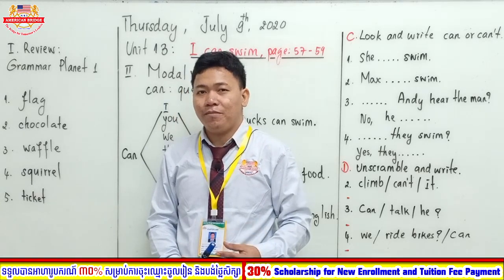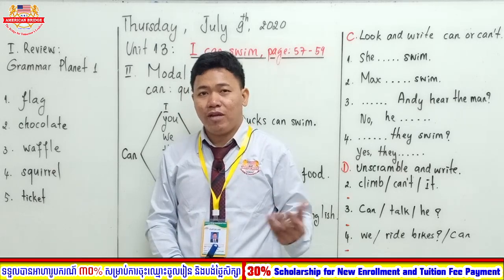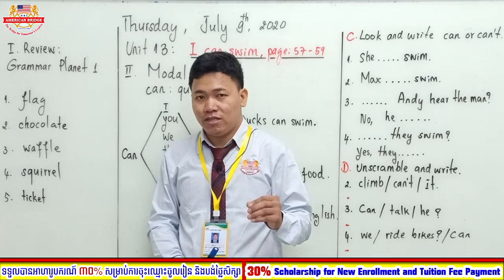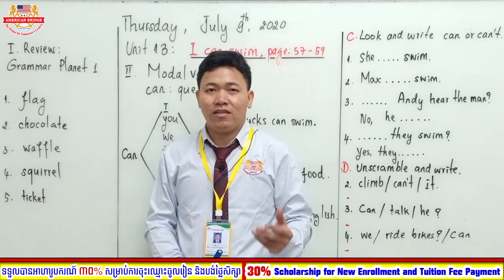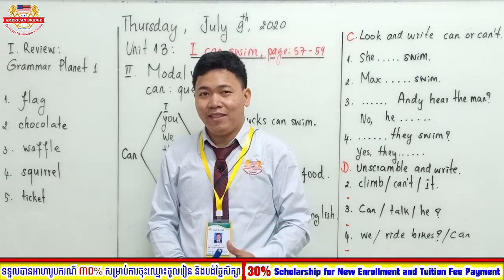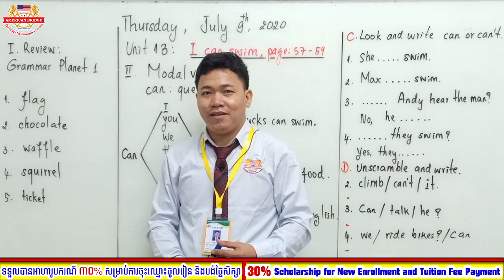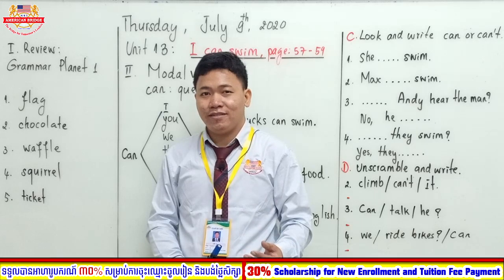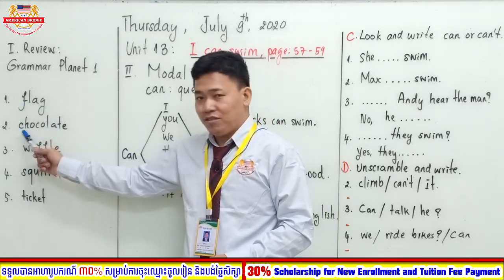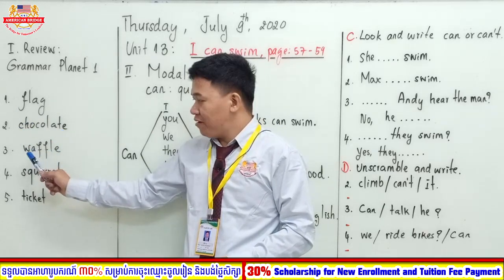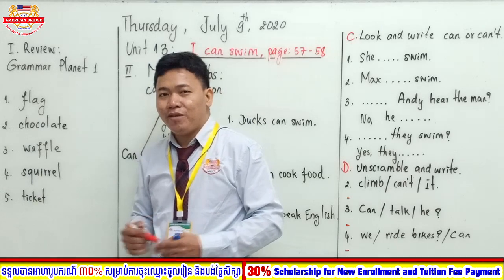Number three is waffle. Waffle is a kind of bread made from milk, water, flour, and sugar. How about number four, squirrel? Squirrel is a small animal that has a long tail and lives in trees. Number five, take it — a piece of paper that allows you to join a show or some events. Everyone read together: fleck, chocolate, waffle, squirrel, take it.